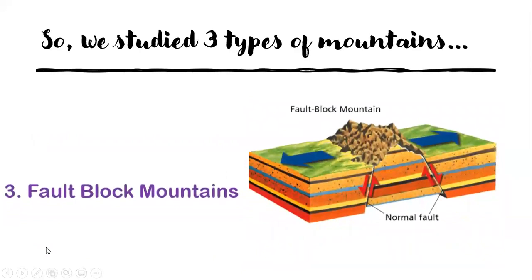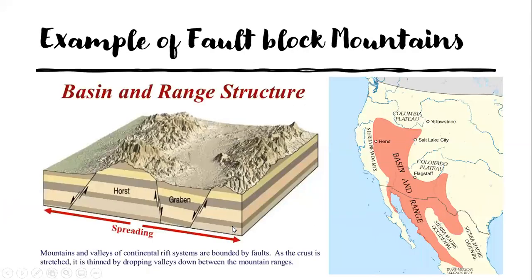Then we have fault block mountains. How are they formed? When two plates are diverging, some blocks of earth's crust go down and some go up. Fault lines — cracks in the earth's crust — are created. Once we have these cracks, some blocks rise and some go down, and this is how fault block mountains are created.